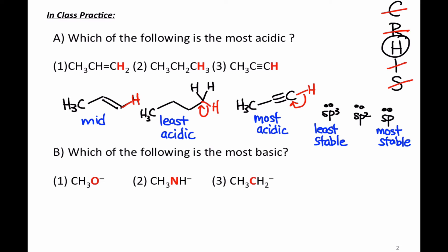What about case B? Well, in case B, the major factor here is a difference in the atom type bearing the negative charge. So now we're asking about basicity, but what we should notice is that the atoms that are bearing the lone pairs, and it may be helpful to actually draw these out just to show this, the atoms bearing the lone pairs are different in all three cases. We've got a carbon in case 3, we've got a nitrogen in case 2, and we've got an oxygen in case 1.